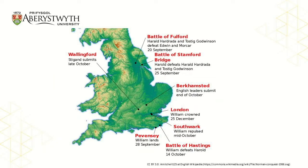In Normandy, Duke William bided his time and made preparations to cross the channel so that he might pursue his claims in person. Bad winds delayed his preparations and he had to postpone his departure. However, he finally landed at Pevensey in Sussex at the end of September 1066. William's forces would face those of Harold on the 14th of October at Hastings.